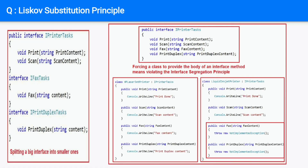L — Liskov Substitution Principle. Objects in a program should be replaceable with instances of their subtypes without altering the correctness of that program. Formally: let phi(x) be a property provable concerning objects x of type T. Then phi(y) has to be true for objects y of type S, where S is a subtype of T. This interpretation appears to be too much pedagogical than practical. The Liskov Substitution Principle is about how you design your solution hierarchy with the help of abstractions while retaining the logic as robust and intact. If the academic definition has to be explained: an object B inherits from object A — we assume that any logic expecting A should function accurately if B is passed to it.